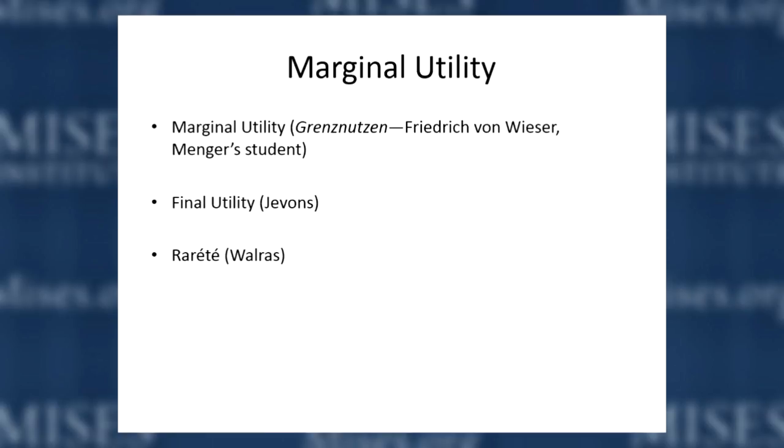They had different names for it. Menger never gave a name for it; one of his students came up with the term Grenznutzen, which is marginal utility. Jevons called it final utility, and also used the term utility, which usually meant satisfaction even before the Marginal Utility Revolution. Rarité was the French term coined by Walras.